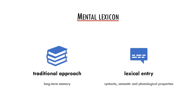The traditional approach to adult vocabulary in psycholinguistics would assume the existence of the so-called mental lexicon. The mental lexicon is considered as a part of long-term memory where words and various information about words are stored. In language processing, we retrieve words from the mental lexicon. The lexicon is a set of lexical entries, and each lexical entry contains information about the syntactic, semantic and phonological properties of a particular word.